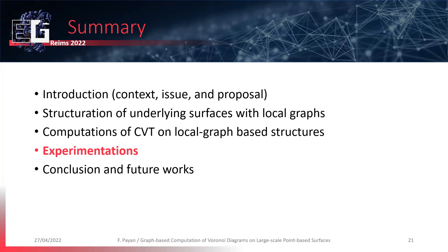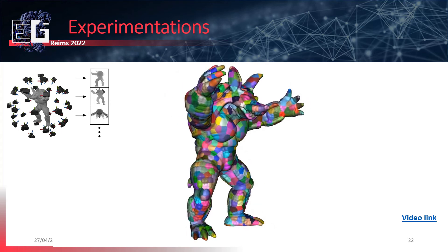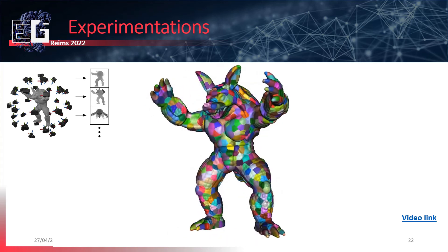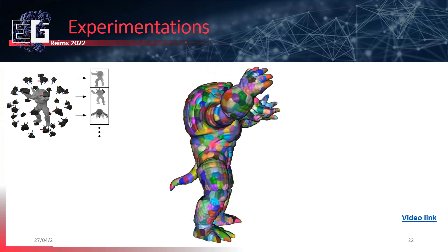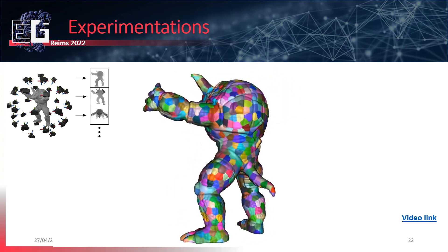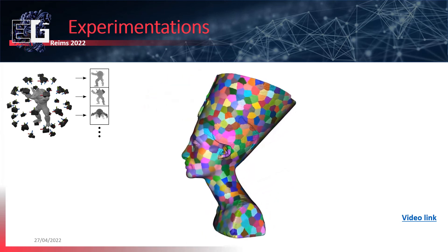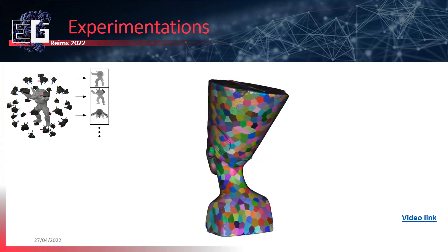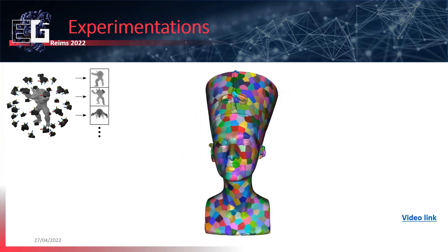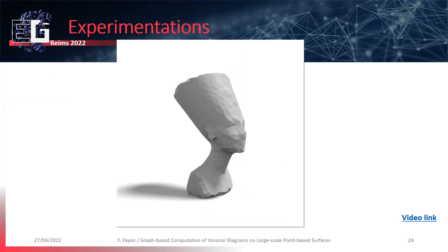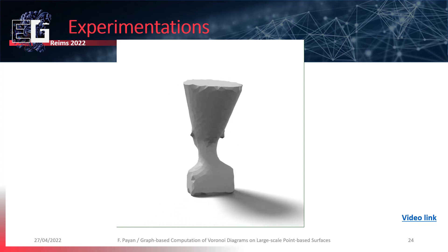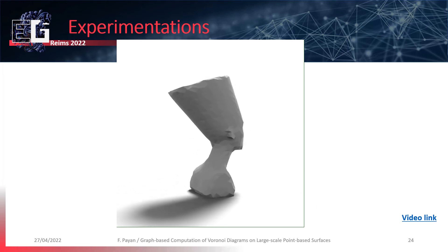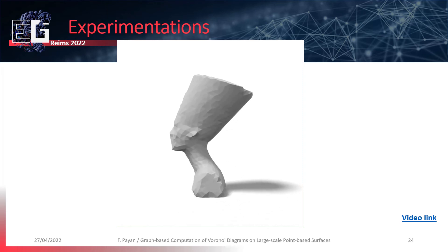Now I show more results on a more complex model. First, on Armadillo, a Voronoi diagram constructed from 12 virtual depth maps. The same result on Nefertiti. We can observe that these two results are quite nice. I also show a reconstruction obtained by triangulation of this diagram, demonstrating that it is possible to construct a nice triangulation of a point-based surface while working locally.